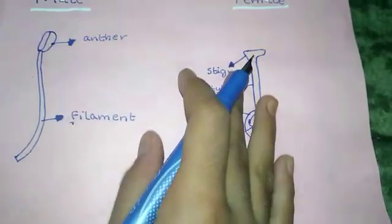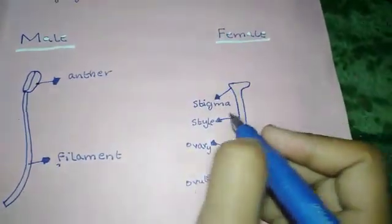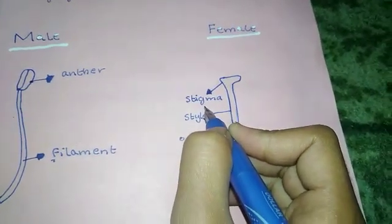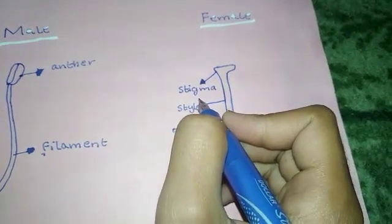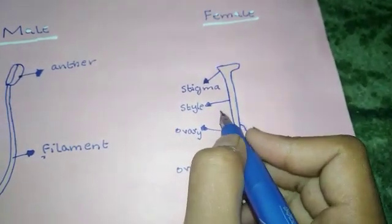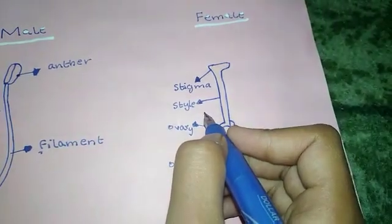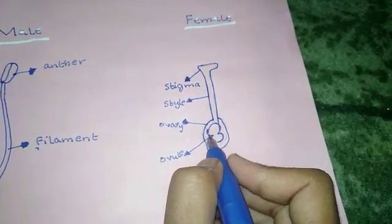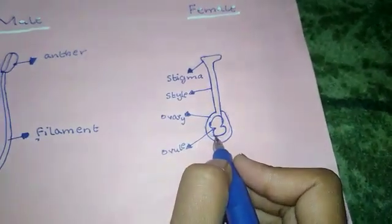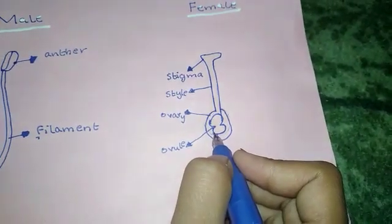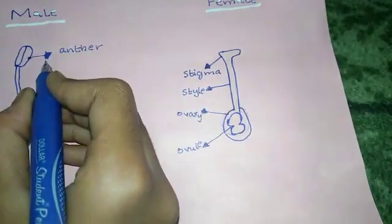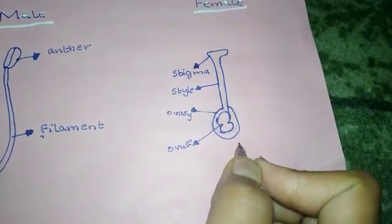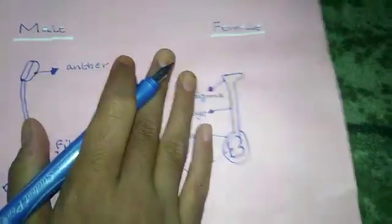Now for the female parts: the stigma is sticky and pollen sticks to it during pollination. The style is a stalk that holds the stigma up in the air to collect pollen. The ovary protects the ovules, and the ovules contain female reproductive cells.